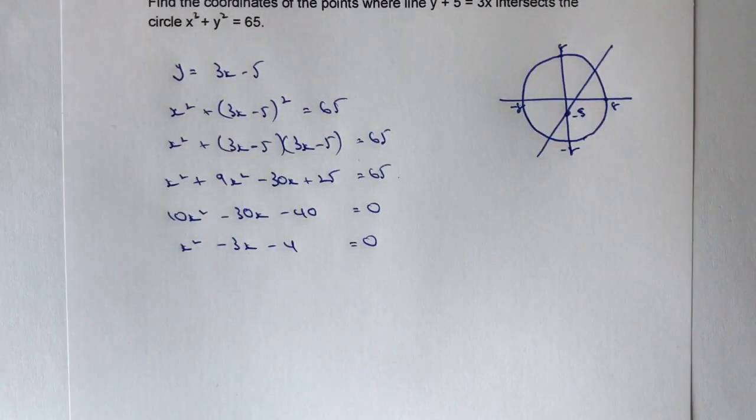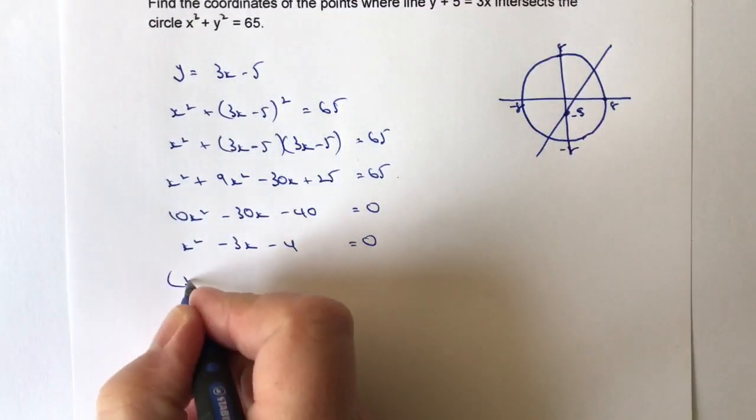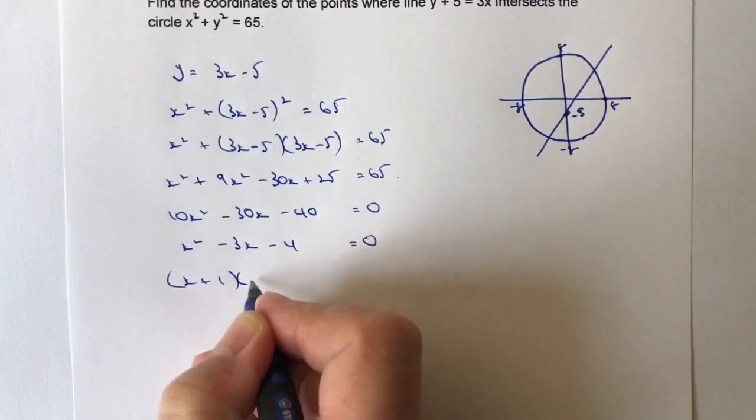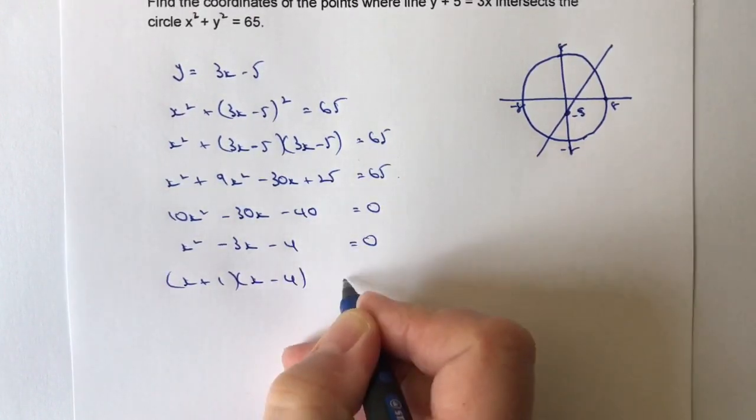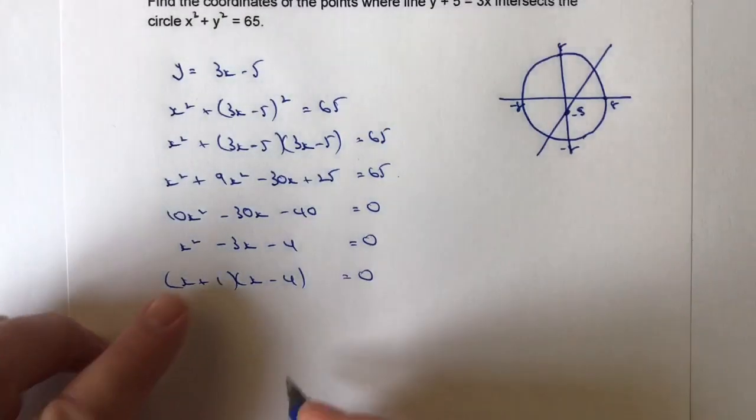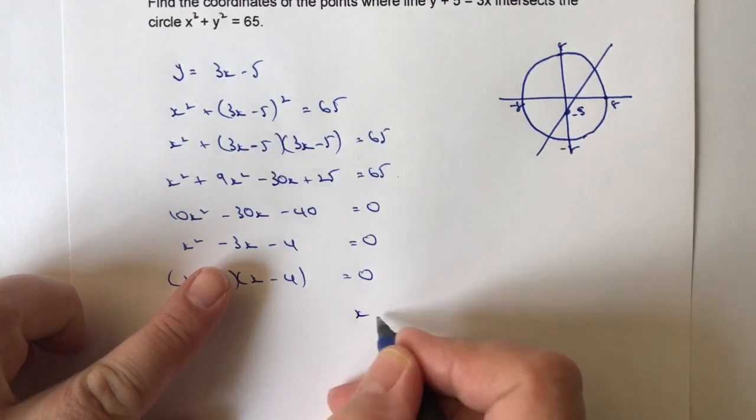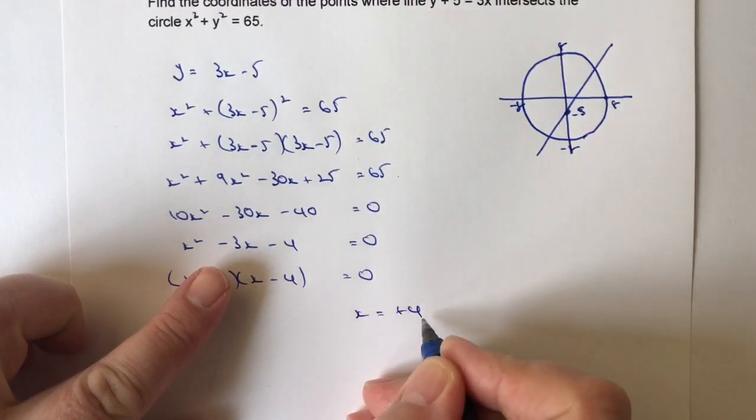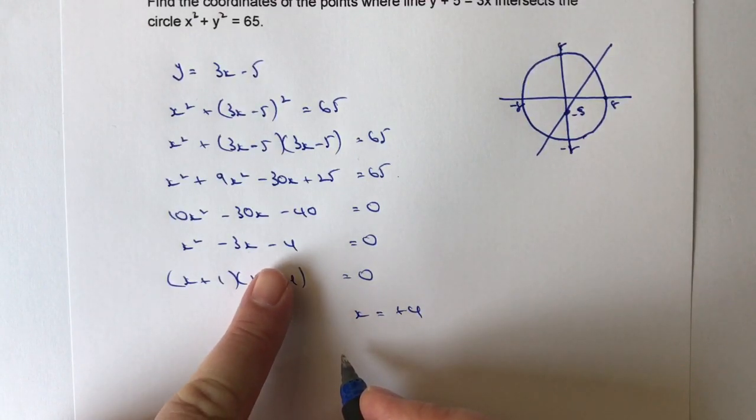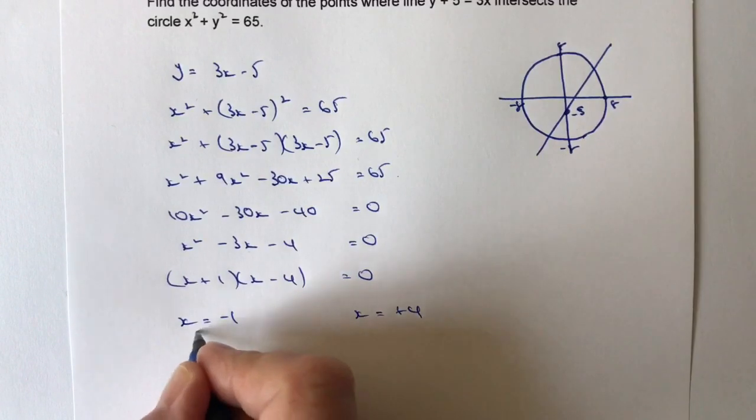And then really it's just a simple case of factorizing that. And you should be able to factorize that to x plus 1 times x minus 4 equals 0. So now we've got two values of x. We've got the first value, which is where x minus 4 equals 0. So therefore, x equals plus 4. And we've got the second value where x plus 1 equals 0. So x equals minus 1.